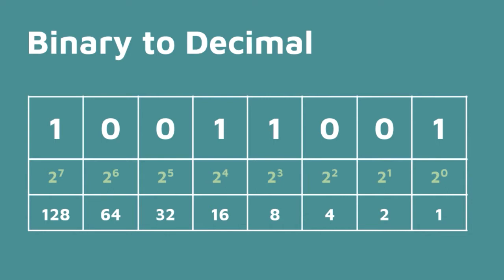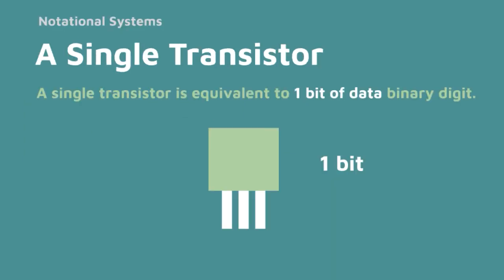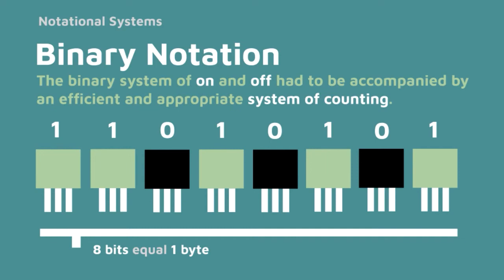If we were to extend this to 8 place values, we would have 2 to the exponent of 4 which is 16, 2 to the exponent of 5 which is 32, 2 to the exponent of 6 which is 64, and 2 to the exponent of 7 which is 128. In computer terms, each place value is equal to 1 bit. 8 bits are equal to 1 byte.